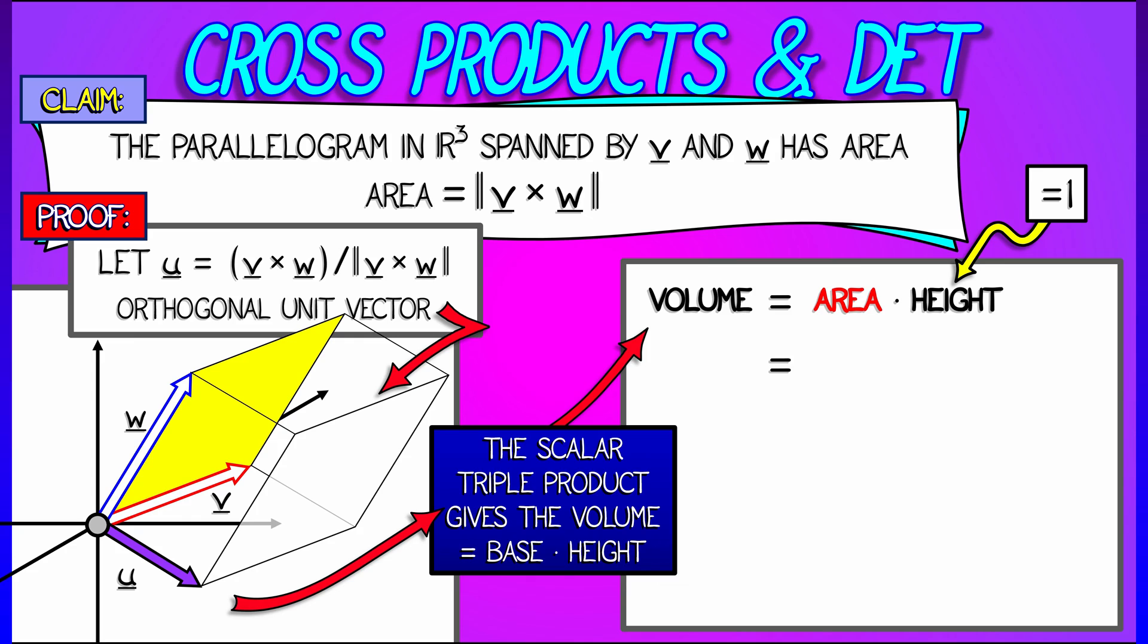Why? Because u is a unit vector. Now, let's write out what that scalar triple product is. That's u dotted with v cross w, but u is v cross w divided by the length of v cross w.